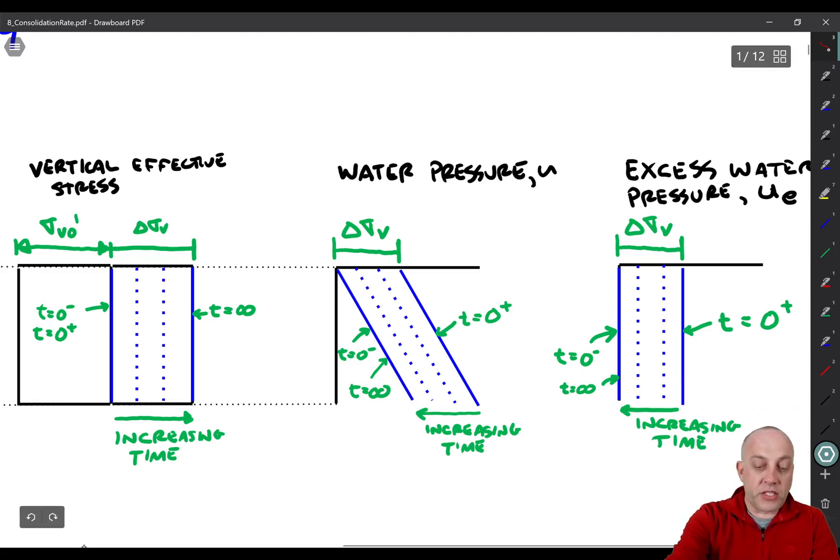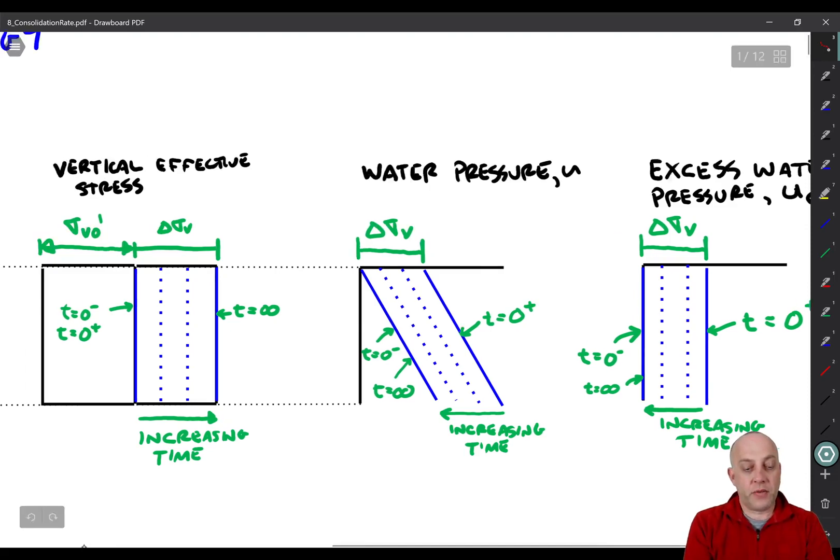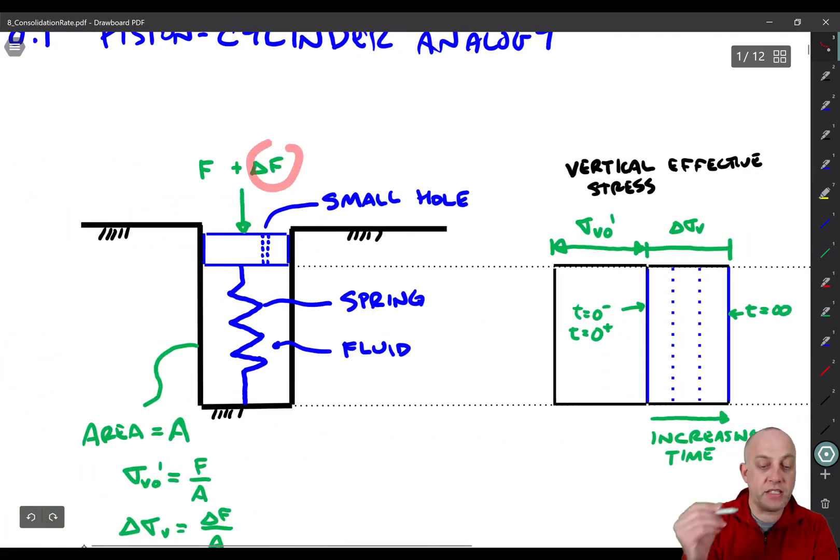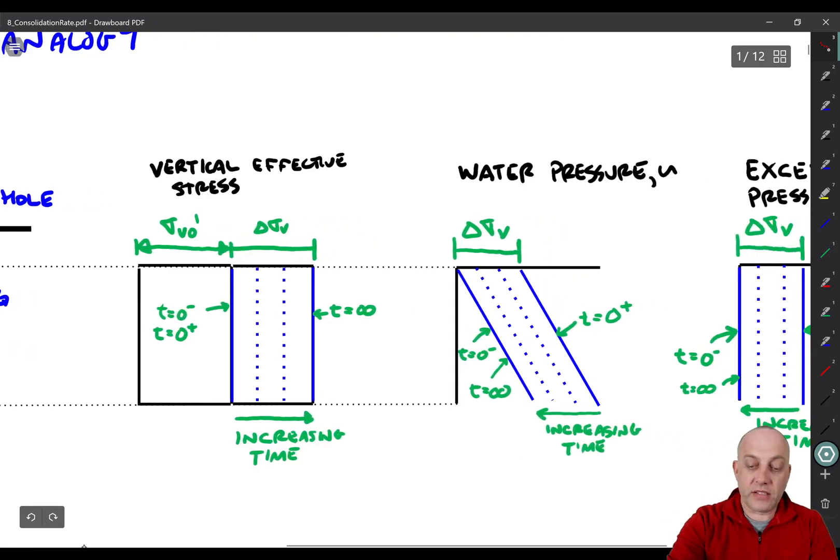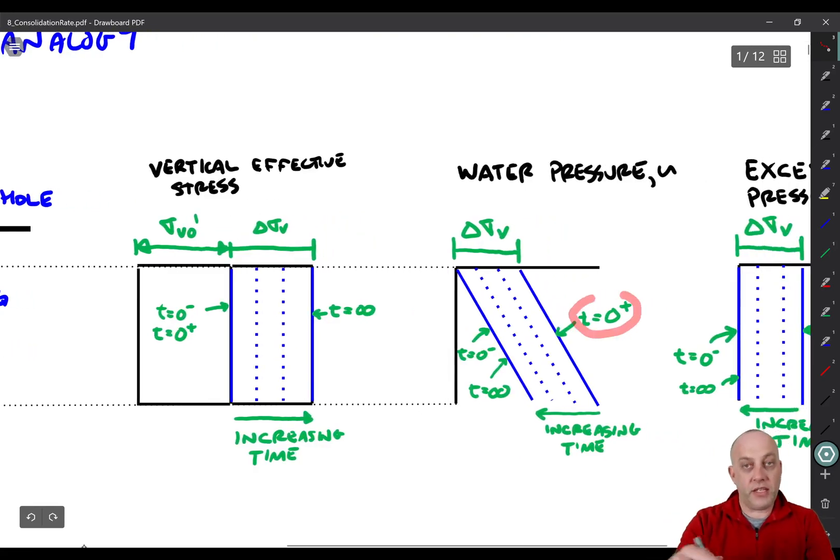And I'm going to use notation here that has T equals zero minus, which means that's at time equals zero but before the load is applied. And we're going to assume that this delta F is applied instantaneously and it takes it immediately up to T equals zero plus, which is now immediately after the load is applied.